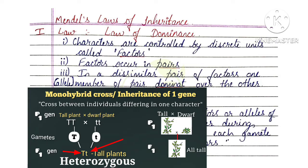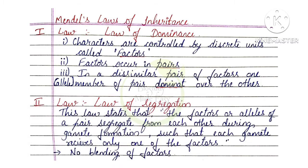This is the Law of Dominance. In a heterozygous condition, one member is dominant — that is the Law of Dominance. So these are the three points for the exam. You can write this as Law of Dominance or the First Law of Mendel.